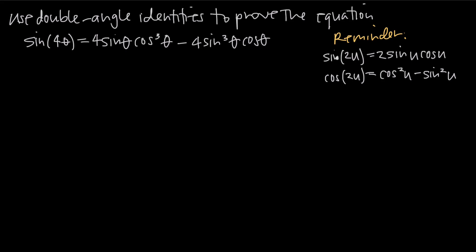For example, sine of 2u is equal to 2 sine of u times cosine of u.